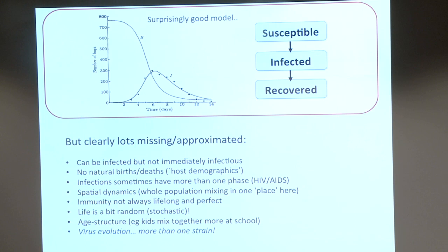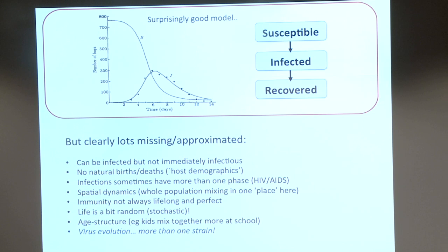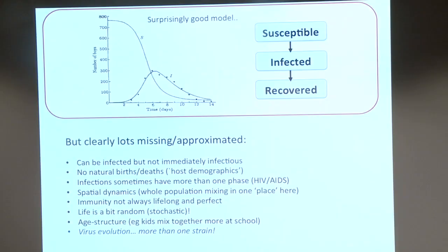Here's my list of what's missing or approximated. One thing I hinted at is that 'infected' and 'infectious' are compounded together. What actually happens is you get infected by flu and you've got a day or two before you're really infectious to others. We can fix that by putting another class in between — E for Exposed — so you go Susceptible, Exposed, Infectious. That's SEIR. There's also no host demographics: there should be births and deaths which are nothing to do with the disease — newborns should appear as susceptibles, and there should be natural death from every category.